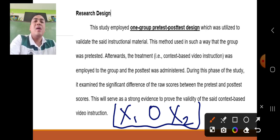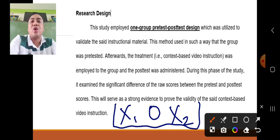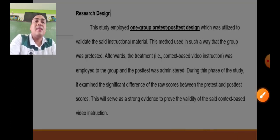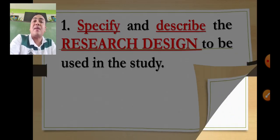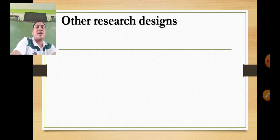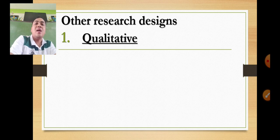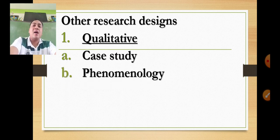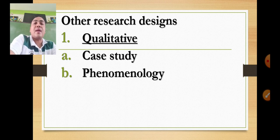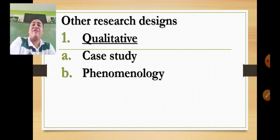Some research designs under qualitative research are as follows: case study — to assess the attitude and behavior of an individual or group; phenomenology — if dealing with meaningful experiences of stakeholders regarding problems; ethnography — for culture; and historical research — to trace past events to apply at present times for future endeavors. These are some research designs under qualitative research.